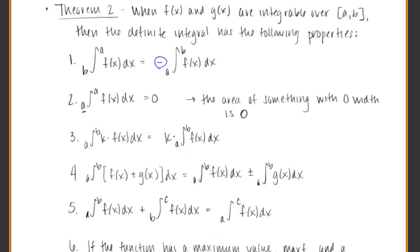The integral from A to A — when we have the exact same value for both bounds — equals 0, no matter what. The integral finds the area under a curve, and if you go from A to A, you have a point, not a curve, and the area of a point is always 0. Also, if you have a constant attached to your function, you can factor it out, just like with derivatives.